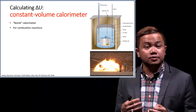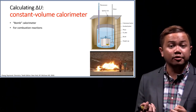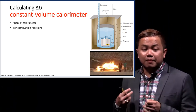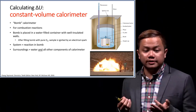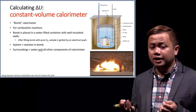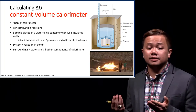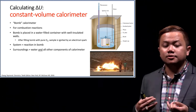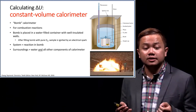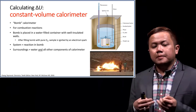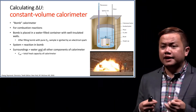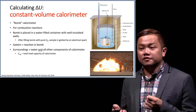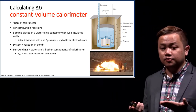Delta U can be measured using a constant volume calorimeter, also known as a bomb calorimeter. Bomb calorimeters are usually used for combustion reactions. A bomb is placed in a water-filled container with well-insulated walls; after filling the bomb with pure oxygen, the sample is ignited by an electrical spark. The system is the reaction within the bomb and the surroundings is the water and all other components of the calorimeter. We define the total heat capacity of the calorimeter and calculate the heat of combustion using that equation.